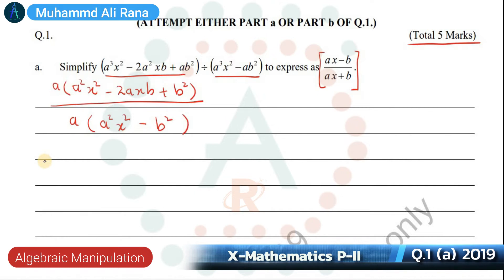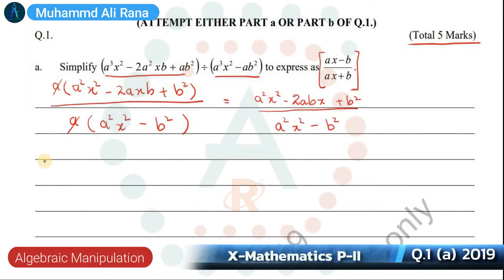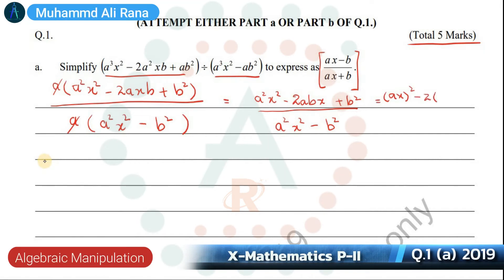This is our first step where we take out the common factor and cancel. The numerator is a perfect square, so here we have AX and here we have B divided by the denominator.